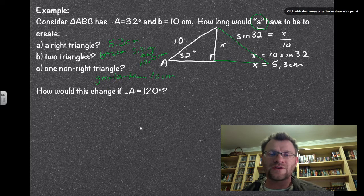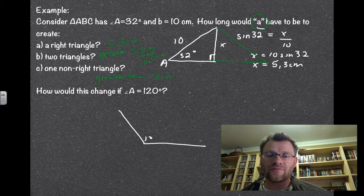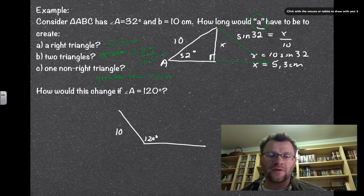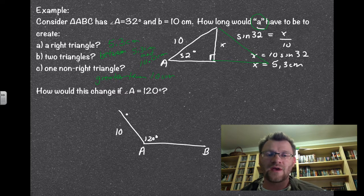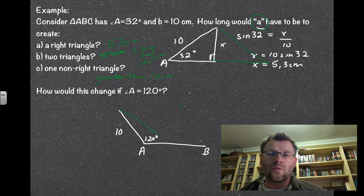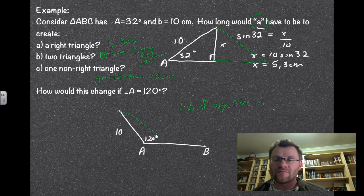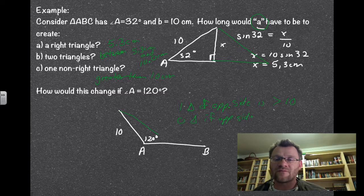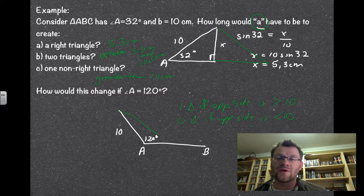If the given angle is obtuse — for example 120 degrees — the job becomes easier. With side B equal to 10 centimeters, if side A is not greater than 10 centimeters it won't reach the other side and no triangle forms. You get one triangle if the opposite side is greater than 10, and zero triangles if it's less than 10. You can't get two triangles when the given angle is obtuse, so you only have two options.